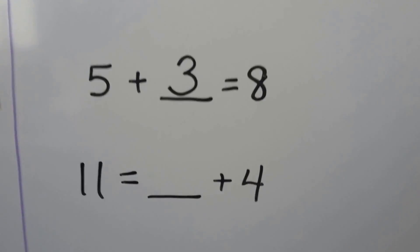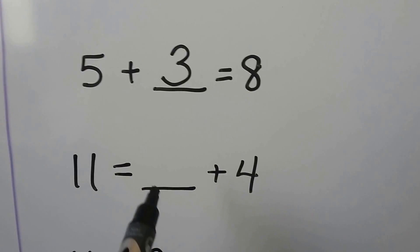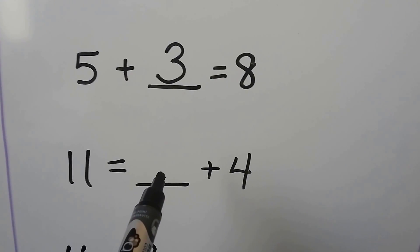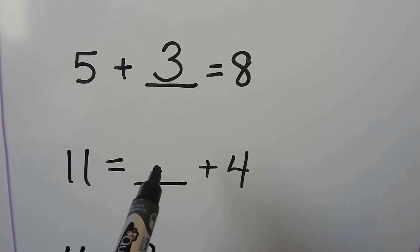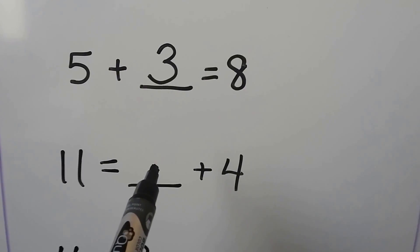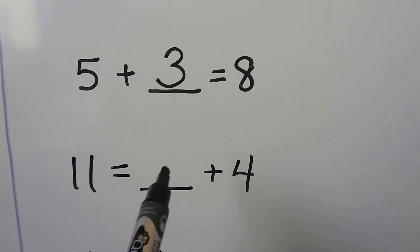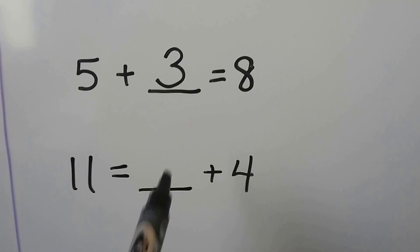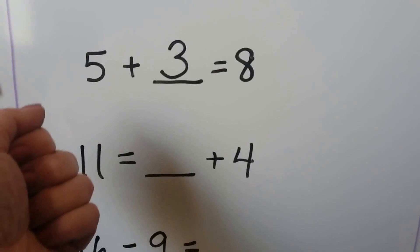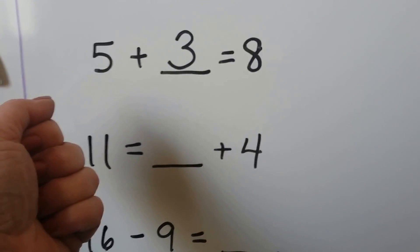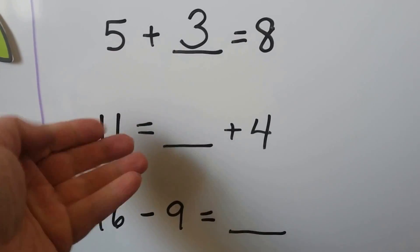11 is equal to some number plus 4. We can use a related fact and use subtraction. We can do 11 minus 4 to find the missing addend. We can start at 11 and count back 4: 11, 10, 9, 8, 7.